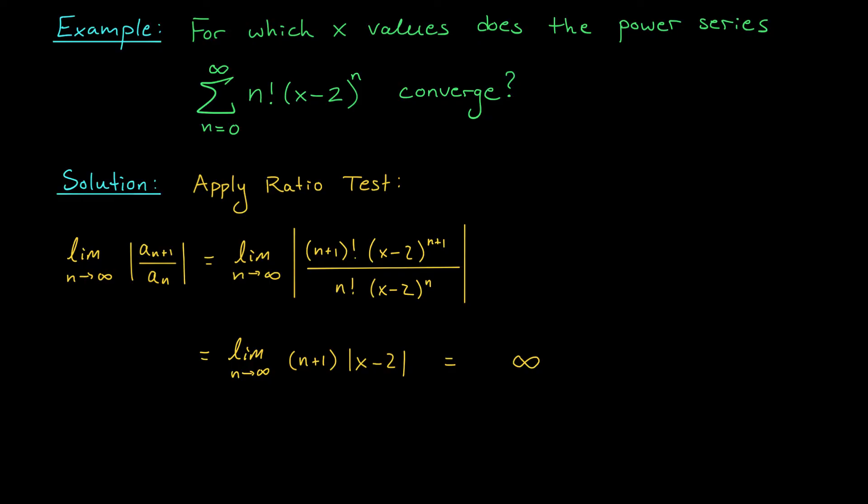If we happen to plug in x equals 2, this expression will be equal to 0 and it will stop my limit from blowing up. It will be constantly 0. So we really have two possible outcomes here. The limit will be infinity if x is not equal to 2 and it will be 0 if x is equal to 2. So what can we conclude about the convergence of our series? Well, if x is not 2, the limit from my ratio test is infinity. It's bigger than 1. The series therefore diverges for these values of x. If instead x is 2, then the limit from my ratio test is equal to 0. It's less than 1, right? So according to the ratio test, this series will converge absolutely.